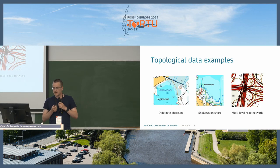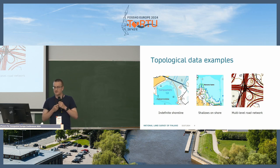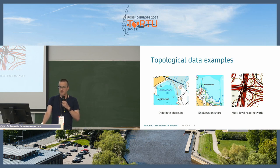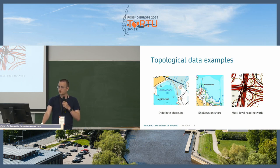Here are some actual raster map examples of the data. We have a shoreline that is marked as indefinite — we mark the boundary as not exact at that location on some parts of the lake. We also have shallows that must reside on a water feature and must share an edge with a sea part feature. Then we have road networks — a multi-level road network with four different levels: one ground and three bridges.